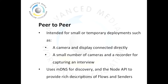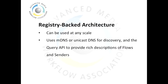Peer-to-peer discovery mode uses multicast DNS for discovery, and then the node API is used to provide rich information about the resources available on each node in the peer-to-peer system. In most situations, a registry-backed architecture is preferred, as this can be used at any scale. In this case, MDNS or unicast DNS is used to discover the registration and query API as part of the discovery system. The query API then provides the rich descriptions of flows, senders, and other resources as the node API did in the peer-to-peer case.